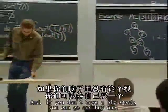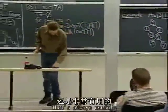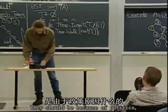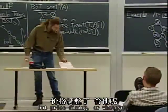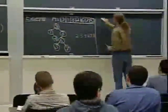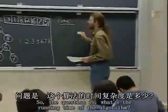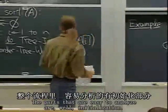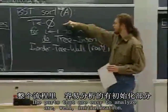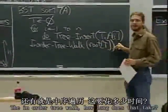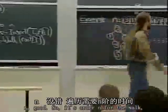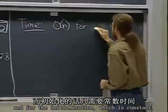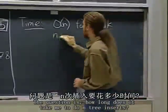So the question is, what's the running time of this algorithm? The parts that are easy to analyze: initialization is constant, and the in-order tree walk takes order n. The question is how long does it take to do n tree inserts?